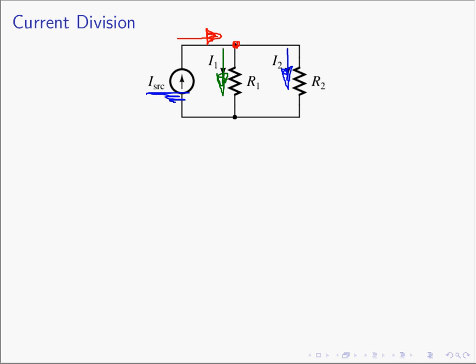What we're going to do today is find out what I1 and I2 are directly. We're going to do the analysis and then commit that result to memory, so the next time current division comes up we can immediately write down the value of I1 and I2 because of the work we do today.